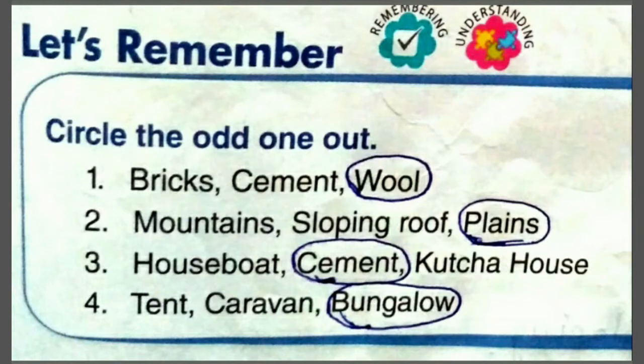Fourth set: tent, caravan and bungalow. तो ये तीनों में से odd है bungalow. क्योंकि tent and caravan temporary house हैं, और bungalow permanent house है. इसलिए bungalow odd है.